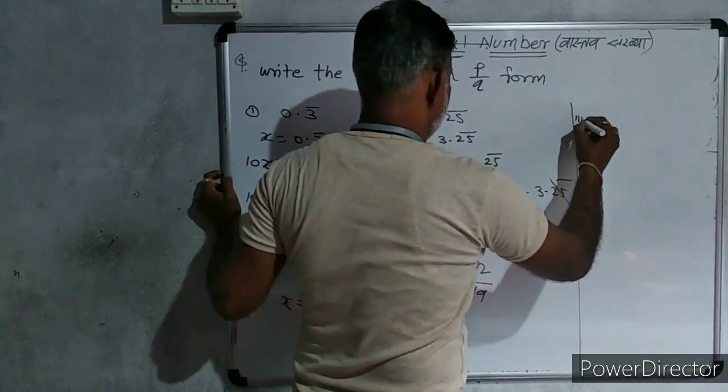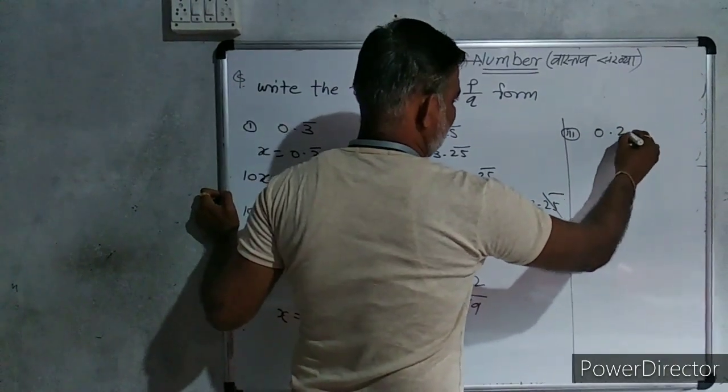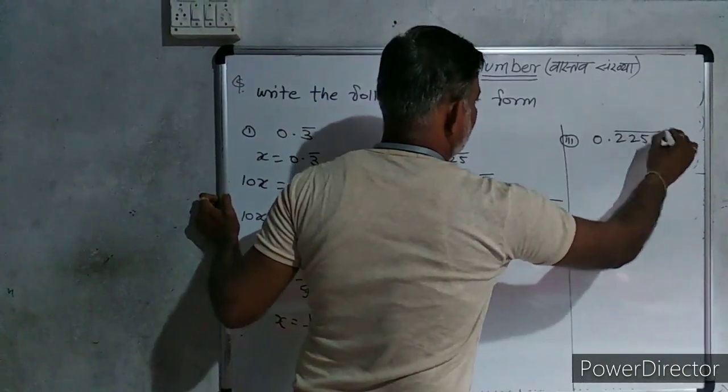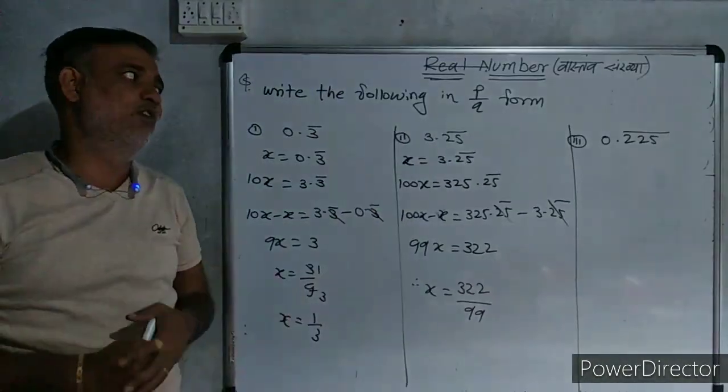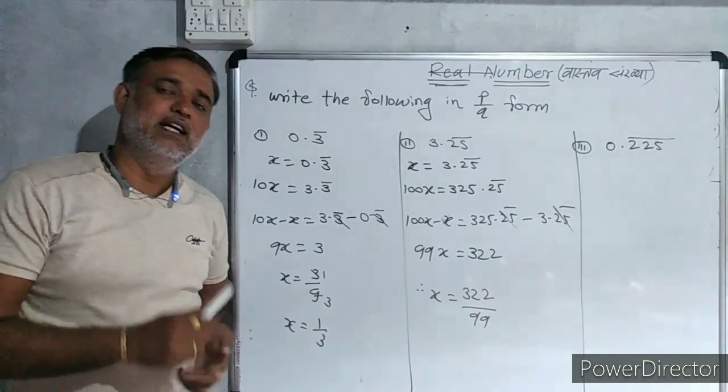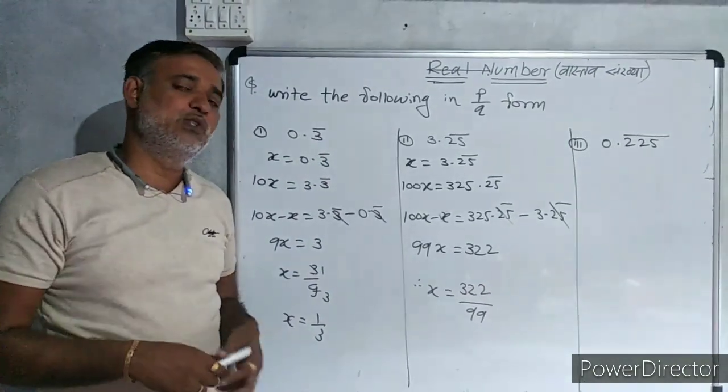One homework for you. If the numbers are like 0.225 bar, then what is the p by q form of that number? You have to solve. And as we have to solve exercise 2.1. We will meet soon. Thank you.